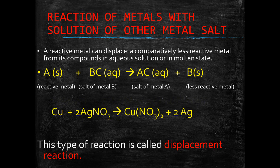For example, when copper reacts with silver nitrate, it gives copper nitrate and silver. This type of reaction is called a displacement reaction.